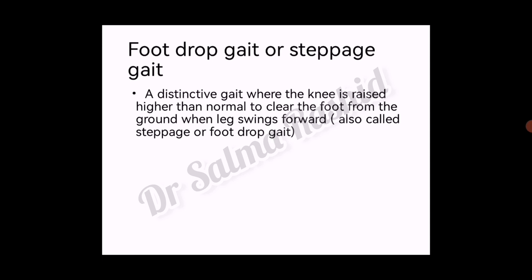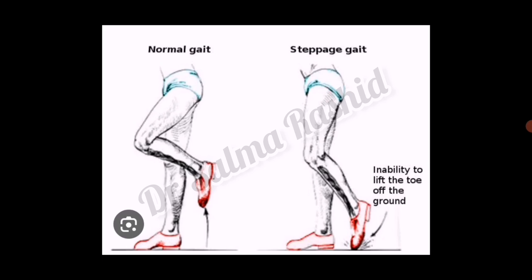Foot drop gait, also called steppage gait, is a distinctive gait where the knee is raised higher than normal to clear the foot from the ground when the leg swings forward. In the diagram, the left side shows normal gait and the right side shows steppage gait — the inability to lift the toe off the ground means the person must raise the knee above normal to clear the foot.